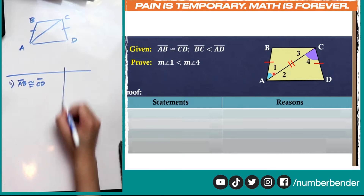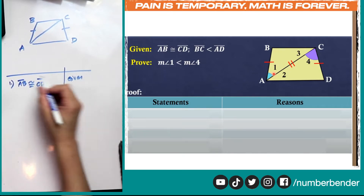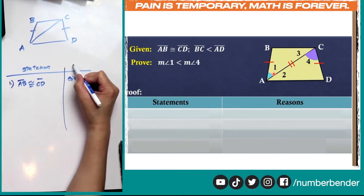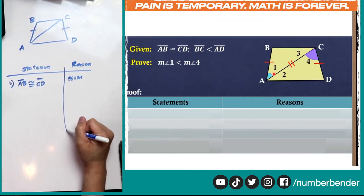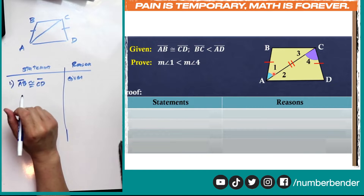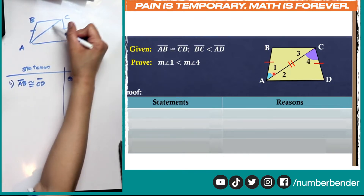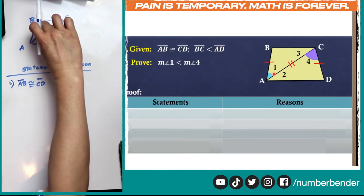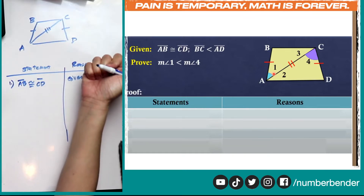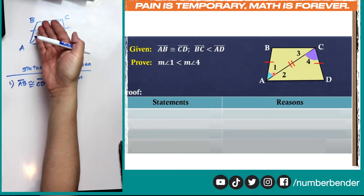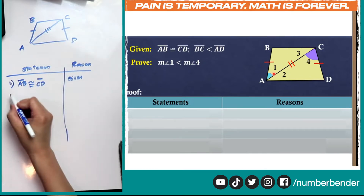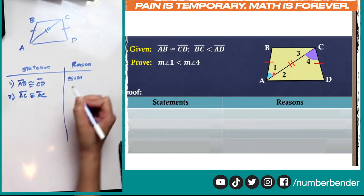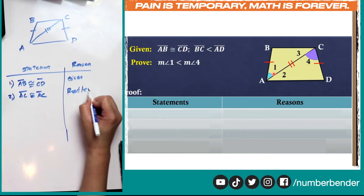That is our statement and that will be our reason. Now that we have our first given information, we can see line segment AC here. If we split these two triangles, AC is common to both triangle ABC and triangle CDA, so we can write AC is congruent to AC using the reflexive property.